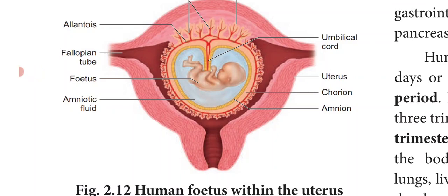In the third trimester, that is the last 3 months — months 7, 8 and 9 — the height and weight of the fetus increases. All the body organs have been formed by the end of the second trimester, so the fetus is fully developed and ready for delivery by the end of the ninth month.